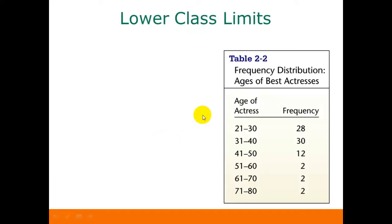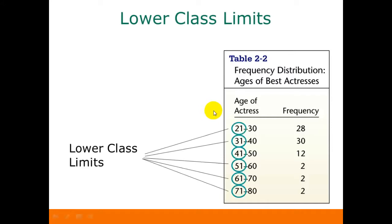Here's the frequency distribution for the ages of actresses who won the Best Actress Award. Here are our classes: 21 to 30, 31 to 40, and so on. The lower class limits are just the first numbers in each class — so 21, 31, and so on up to 71.